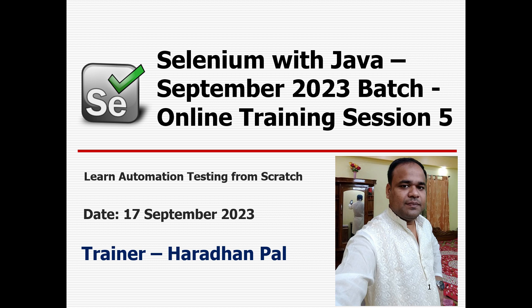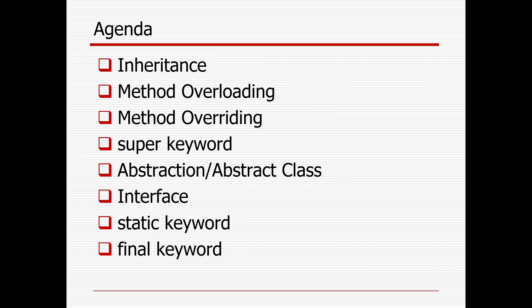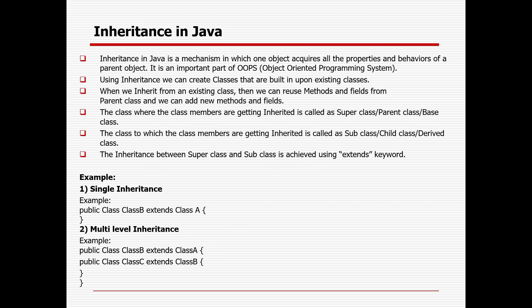Welcome back to Selenium with Java September 2023 batch, online training session 5. In the first two sessions you already learned a lot about basic Java: data types, different kinds of operations, loops, conditional statements, wrapper classes, exception handling, try-catch blocks, and finally blocks. Today I will try to cover most of the important topics from Java OOPs concepts.